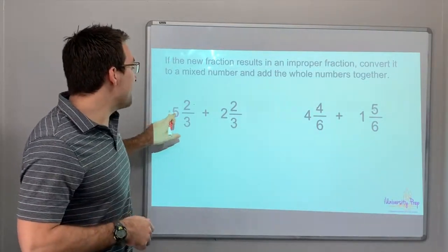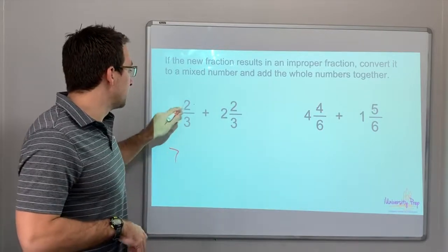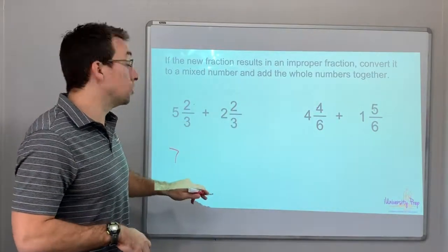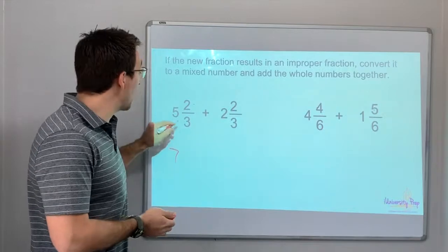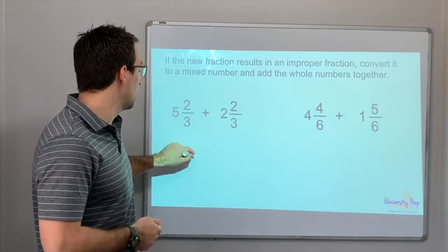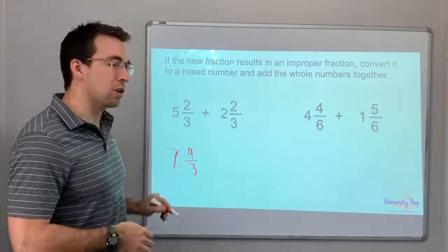So 5 plus 2, that's 7. 2/3 plus 2/3 - oh, that's kind of what it's talking about, improper fraction. 2 plus 2 is 4, so 4/3. So 7 and 4/3.